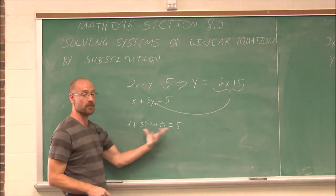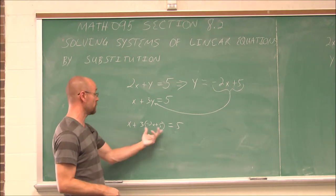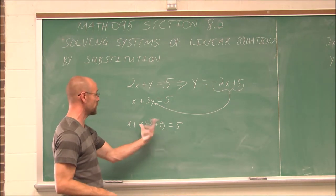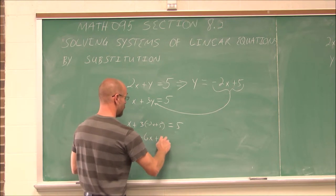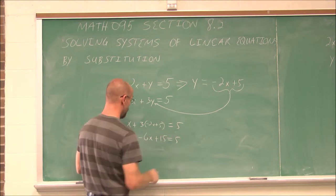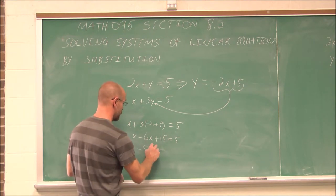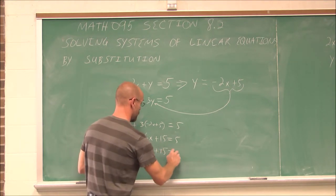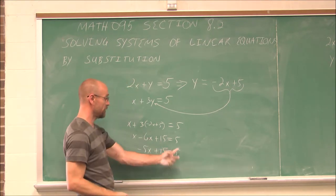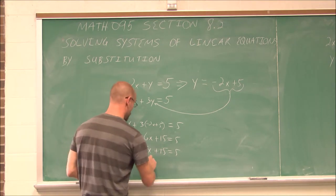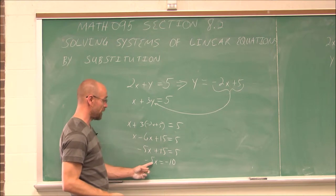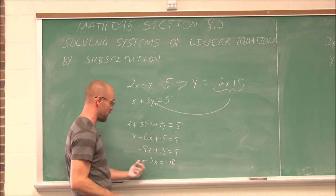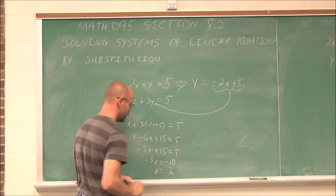So I'm going to do that right here. x plus 3 times y equals 5. I'm going to replace the y value with negative 2x plus 5. And now I see I only have x's in this equation. So I can simplify and solve for it. Distribute to get rid of parentheses. x minus 6x plus 15 equals 5. x minus 6x is going to be negative 5x. I can subtract 15 from both sides and then divide by negative 5.